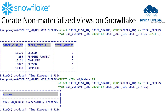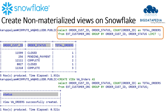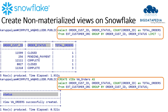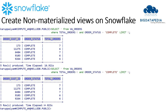Let me create a non-materialized view now. Here is a select statement that I am going to select some data from the table. The same select statement I am converting as a view using the view command. For the view syntax: create view, view name, as, then the select statement. Once it is executed, the view will be created. This is like normal RDBMS.